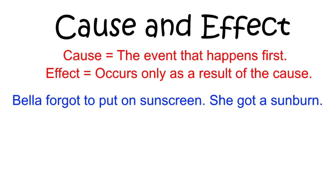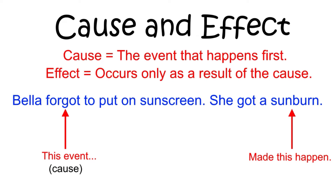In this first example, Bella got a sunburn. The event that led to her getting the sunburn was that she forgot to put on sunscreen, so that is the cause. Getting the sunburn is considered the effect because it happened only as a result of the first event. The fact that Bella forgot to put on sunscreen caused her to get a sunburn.